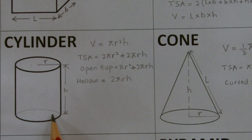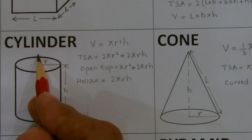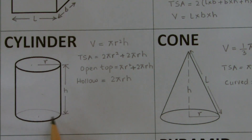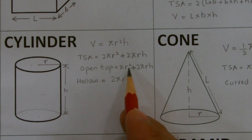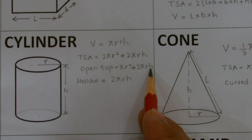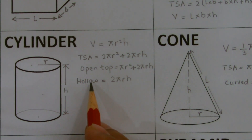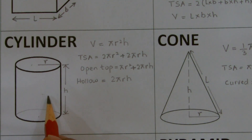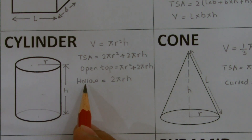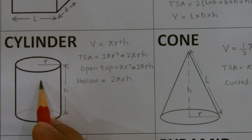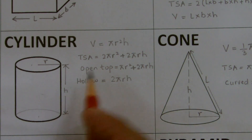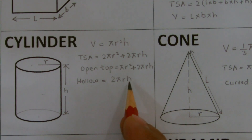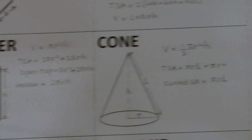For an open-top cylinder, like a glass, the top circle is not included. We only have the bottom (πr²) and the curved surface area (2πrH), giving πr² + 2πrH. For a hollow cylinder — like a tissue roll — where only the curved surface is needed, the area is simply 2πrH.